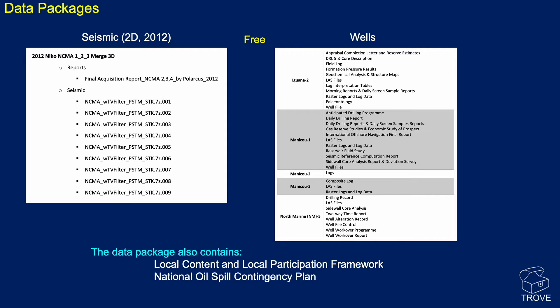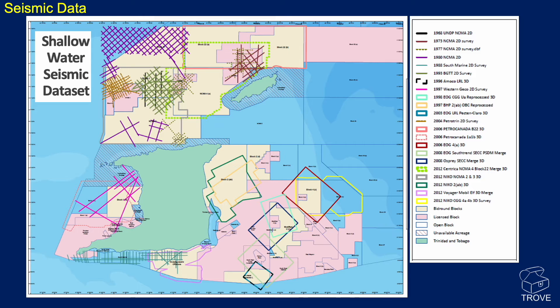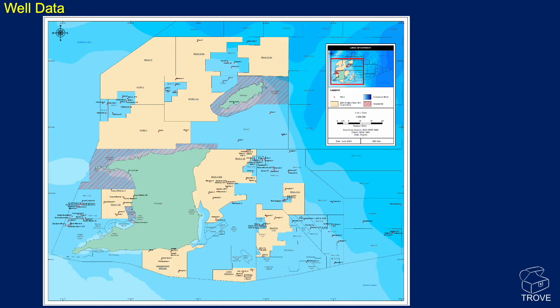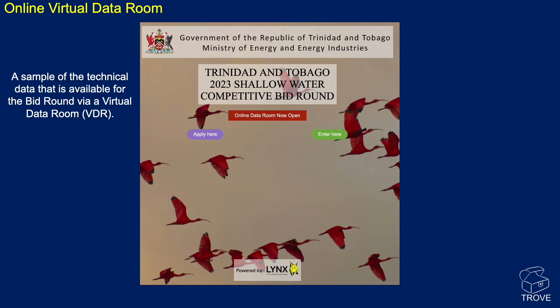In terms of data packages, there's lots of 2D data, some 3D data, and lots of wells. There's also information about the local content and local participation framework, and the National Oil Spill Contingency Plan, all available online. You can see lots of 2D and some 3D seismic data, some of which is actually covering the areas up for the round. Pause the video if you would like to see more details. In terms of well data, here you can get a flavour of where the released wells are that are in the packages obtainable from the regulator. There is also an online virtual data room using the link system — a great opportunity to have a look at the data.